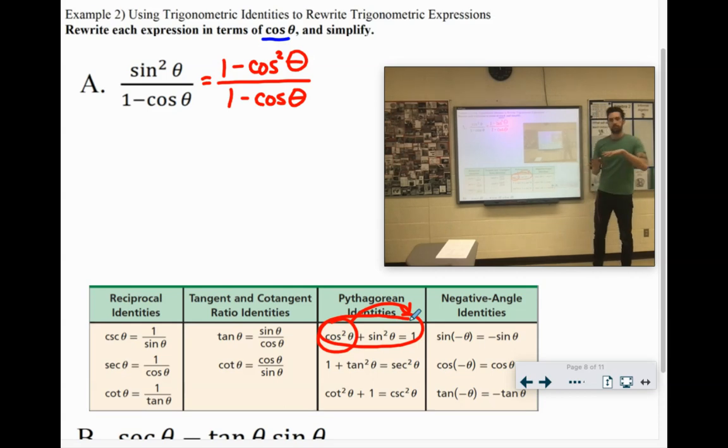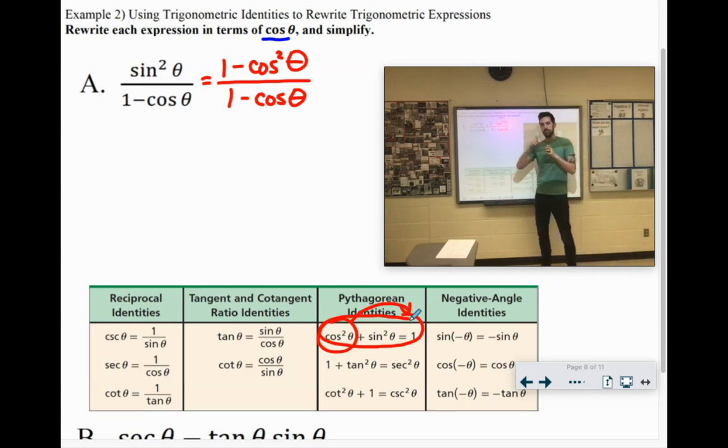Now it looks like we could just cancel stuff out, but we can't, right? You can only cancel stuff out if it's like a factor out in front, or if the entire thing is exactly the same, which it isn't. But, if you remember from our old factoring days...